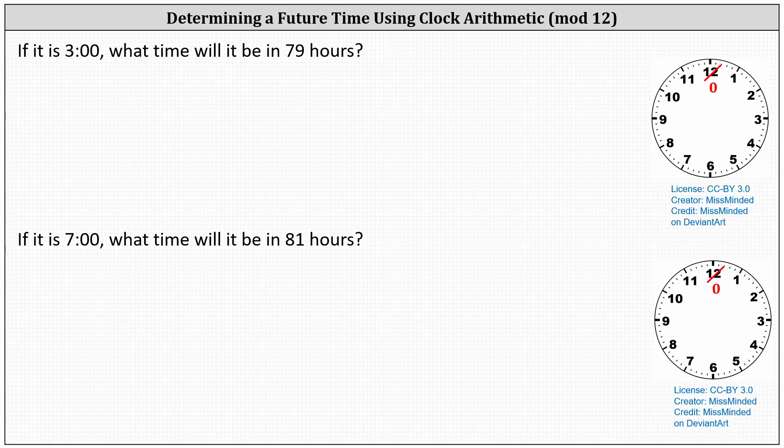In this lesson, we'll take a look at two examples of determining a future time using clock arithmetic, or mod 12 arithmetic. And we'll actually end up finding this sum two ways.